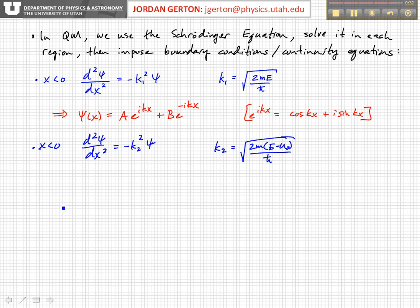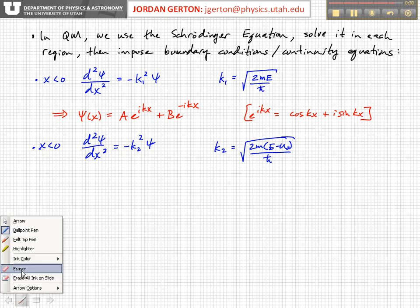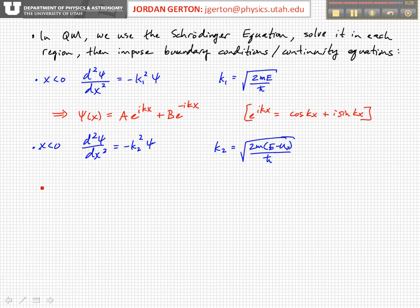So this gives us solutions, general solutions equal the same form, C times e to the i k2x—this should be k1, k1—this should be k2x, plus D e to the minus i k2x.